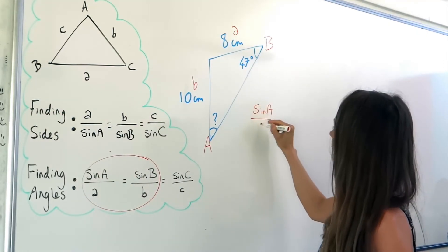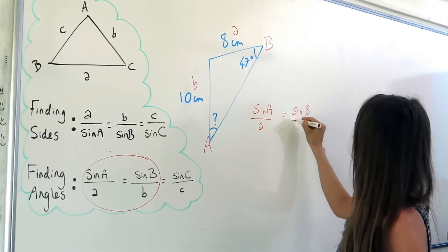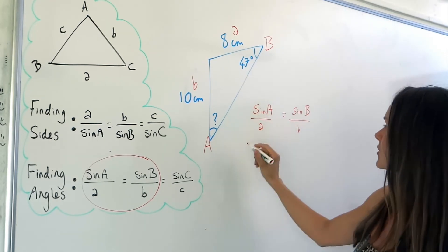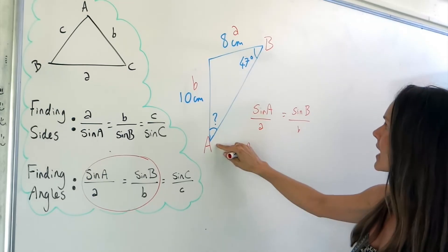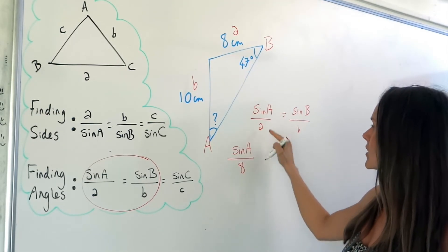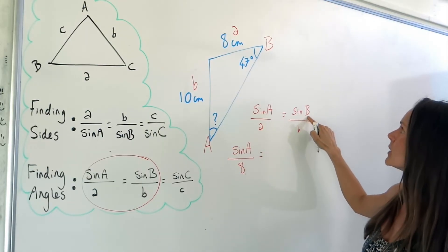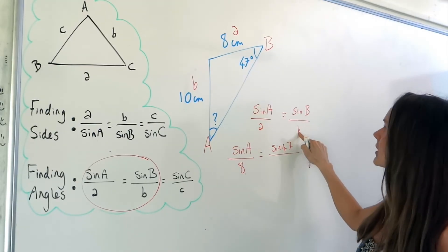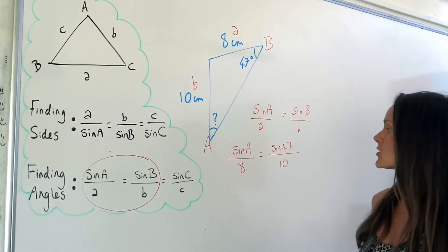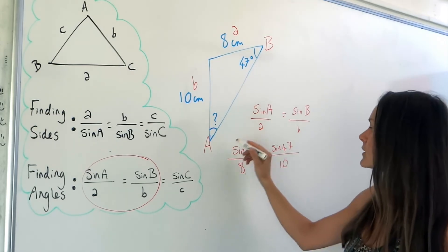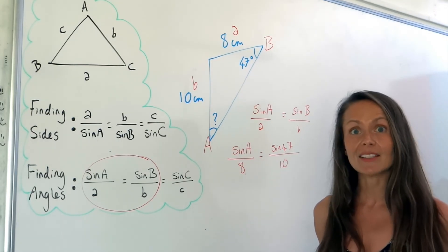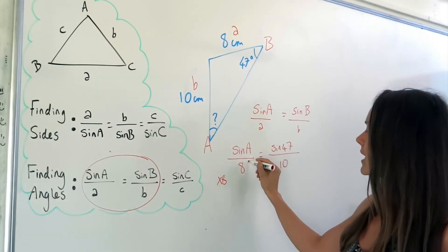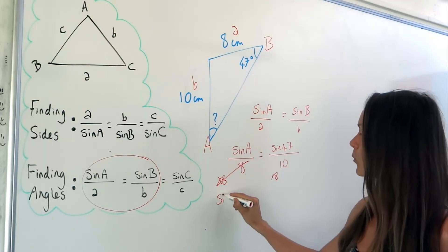Writing out and substituting into the equation: angle A is what we don't know so we leave it as sine A. Side A is 8 centimetres, so we change A to 8. Angle B is 47, so we write sine 47. The denominator is side B which is 10 centimetres. To get rid of the fraction, the opposite of dividing by 8 is to multiply. Multiply both sides — on the left it cancels, leaving 1 sine A.